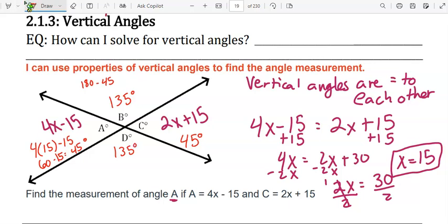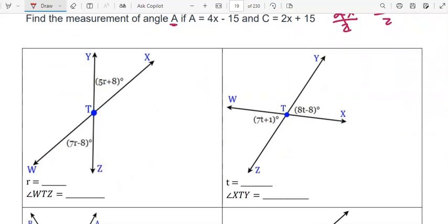So angle A equals 45 degrees. That's our final answer. Okay, try the rest of the problems on your own.